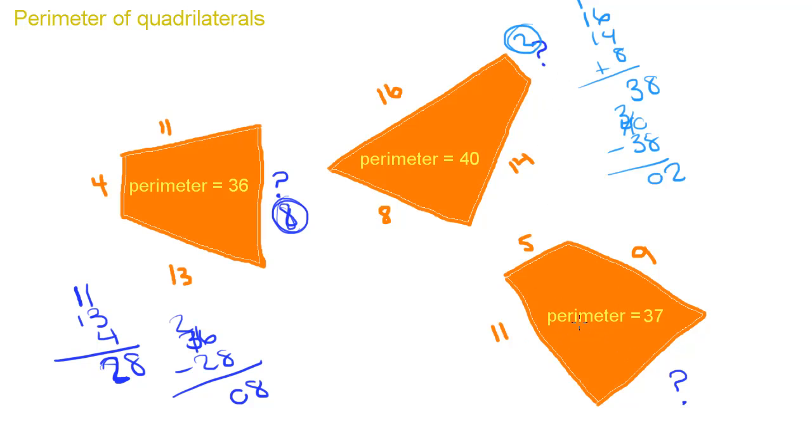And over here we have a perimeter of 37, so we add 9, 11. We know it's 20 and plus 5 is 25. So we take 37 minus 25.